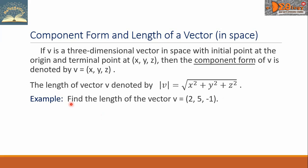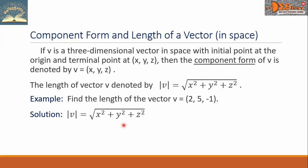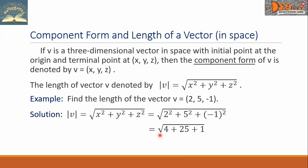As an example, let us find the length of vector V equals (2, 5, negative 1). Using our formula, let us substitute the corresponding values. We have the square root of 2 squared plus 5 squared plus the square of negative 1. Simplifying, we have the square root of 4 plus 25 plus 1, which comes to the square root of 30.